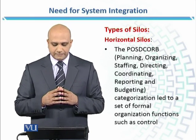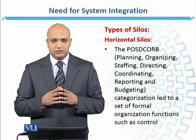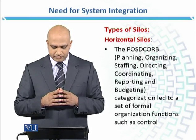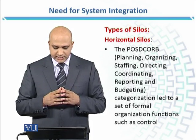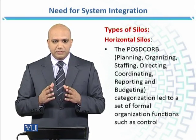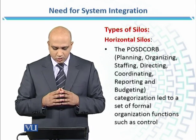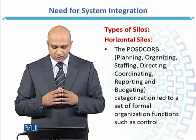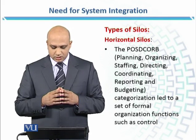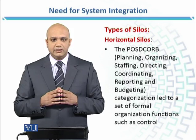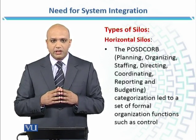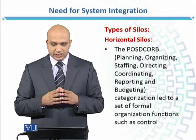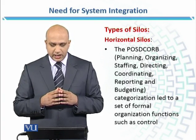The first type is horizontal silos. These are represented by POSDCORB: P stands for Planning, O stands for Organizing, S for Staffing, D for Directing, then Coordinating, Reporting, and Budgeting. This categorization led to a set of formal organization functions such as control and administration.